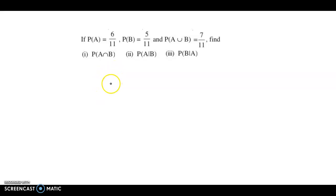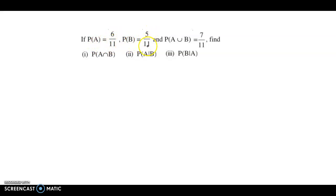Hello and welcome back. We now discuss an example from probability. The question is: if probability of A is 6 by 11, probability of B is 5 by 11, and probability of A union B is 7 by 11, find probability of A intersection B.